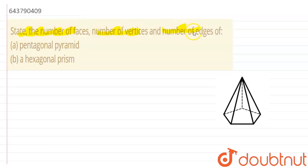Hello everyone, here the question is: state the number of faces, number of vertices, and number of edges of a pentagonal pyramid and hexagonal prism. So let's start. The first part is pentagonal pyramid. I have shown the figure.